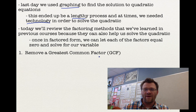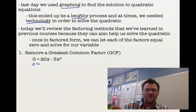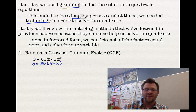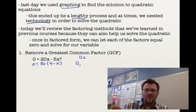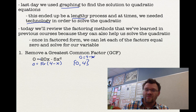The first method is always to remove a greatest common factor first. Here's an example: 0 equals 20x minus 5x squared. The greatest common factor is 5x, and we're left with 4 minus x. Now we can set each factor equal to zero — this is called the zero product property, meaning one of them has to equal zero. If 5x equals zero, then x equals zero. If 4 minus x equals zero, we move x to the other side and x equals positive 4. Those are our two answers, and this is a lot easier than graphing.